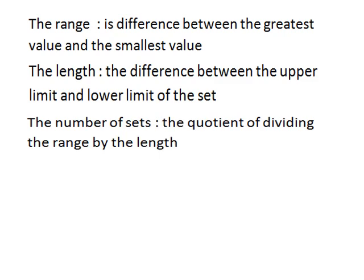The number of sets is the quotient of dividing the range by the length. If you have the range and the length of the set, divide the range by the length to find the number of sets. Conversely, the length of the set is calculated by dividing the range by the number of sets. The only formula that uses multiplication is finding the range: range equals number of sets multiplied by length.